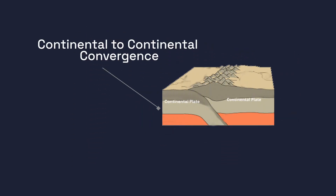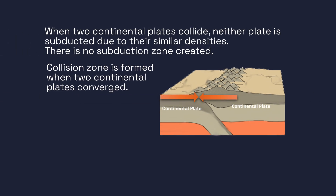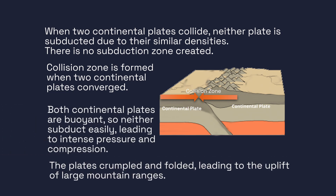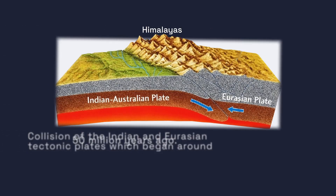The last type of convergent plate boundary is a collision between two continental plates. When two continental plates collide, neither plate is subducted due to their similar densities, so no subduction zone is created. Instead, a collision zone is formed. Both continental plates are buoyant, so neither subducts easily, leading to intense pressure and compression. The plates crumple and fold, leading to the uplift of large mountain ranges, and the crust becomes thicker as the layers are folded and faulted.